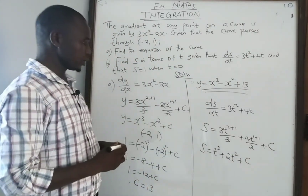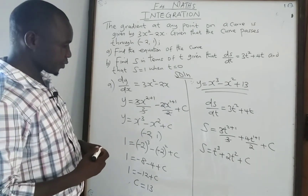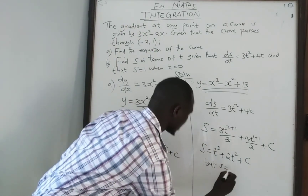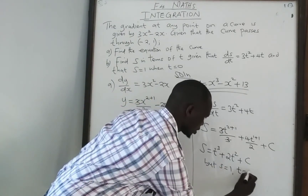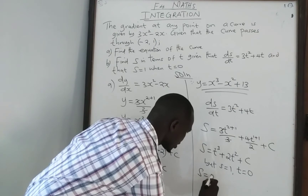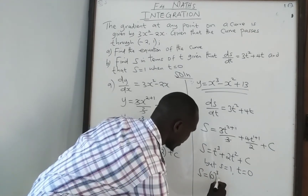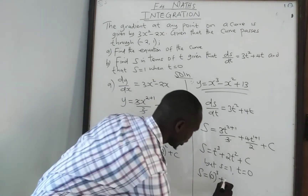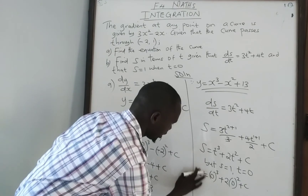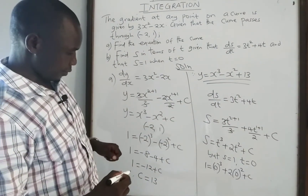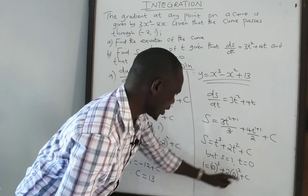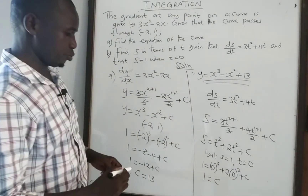This is the general equation; we need the specific equation, so we find c. We know s equals 1 when t equals 0. Substituting: 1 equals (0) cubed plus 2(0) squared plus c. Since 0 cubed is 0 and 0 squared is 0, we get c equals 1.